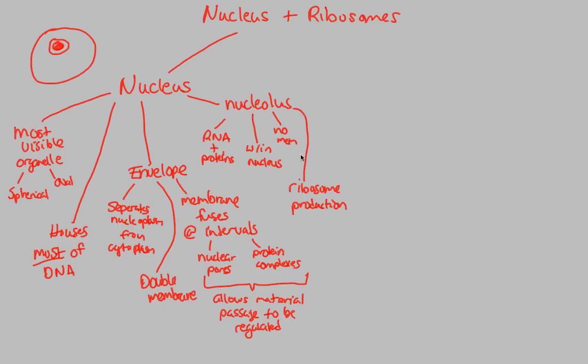The most important thing you want to know about the nucleolus is that it is the site of ribosome production. Ribosomes are those areas of protein synthesis. This is where they're made. They're made in the nucleolus. And then they're shipped out. When they're shipped out, what do you think they have to go through? Nuclear pores, of course. And they have to go through these nuclear pores because this is what allows material to be regulated, the passage of materials.